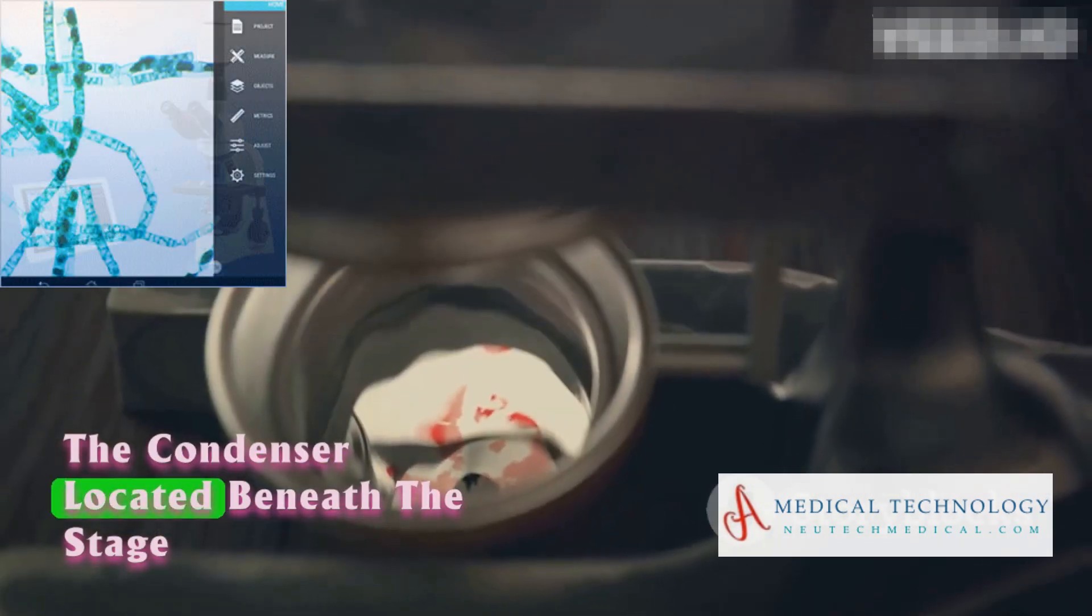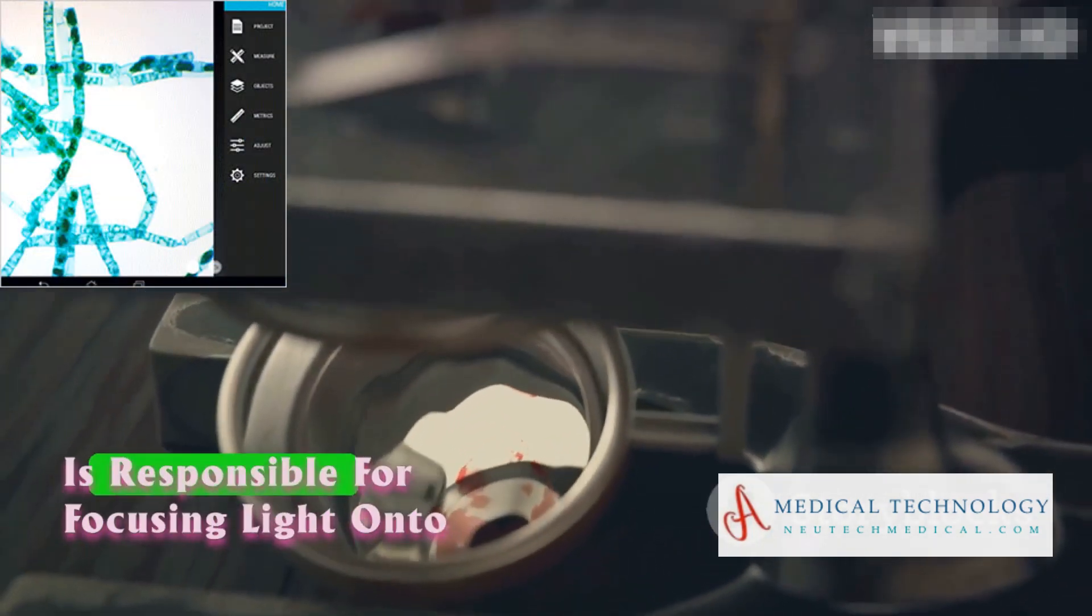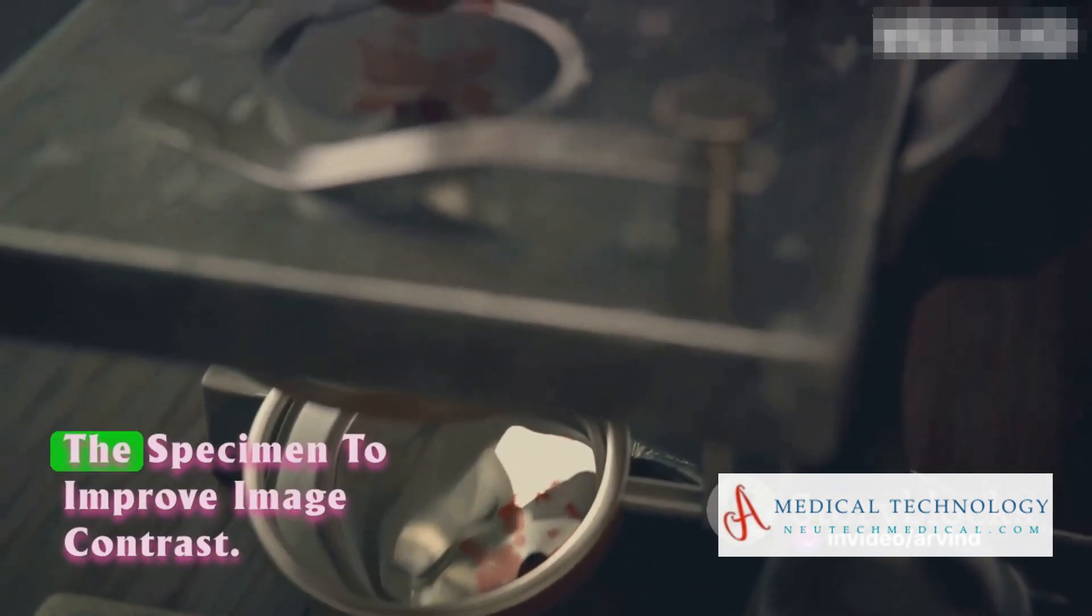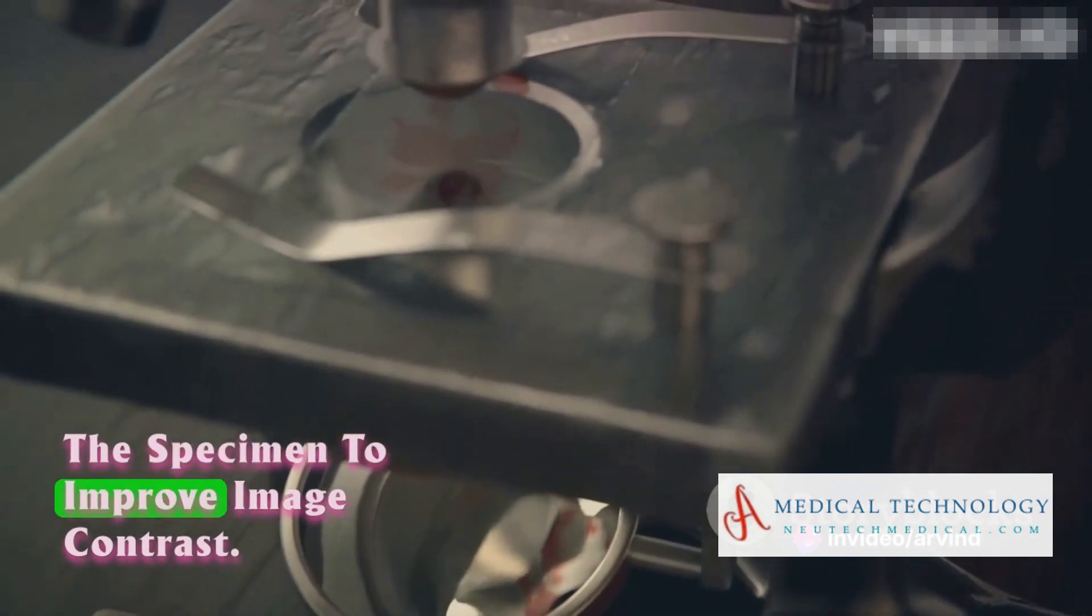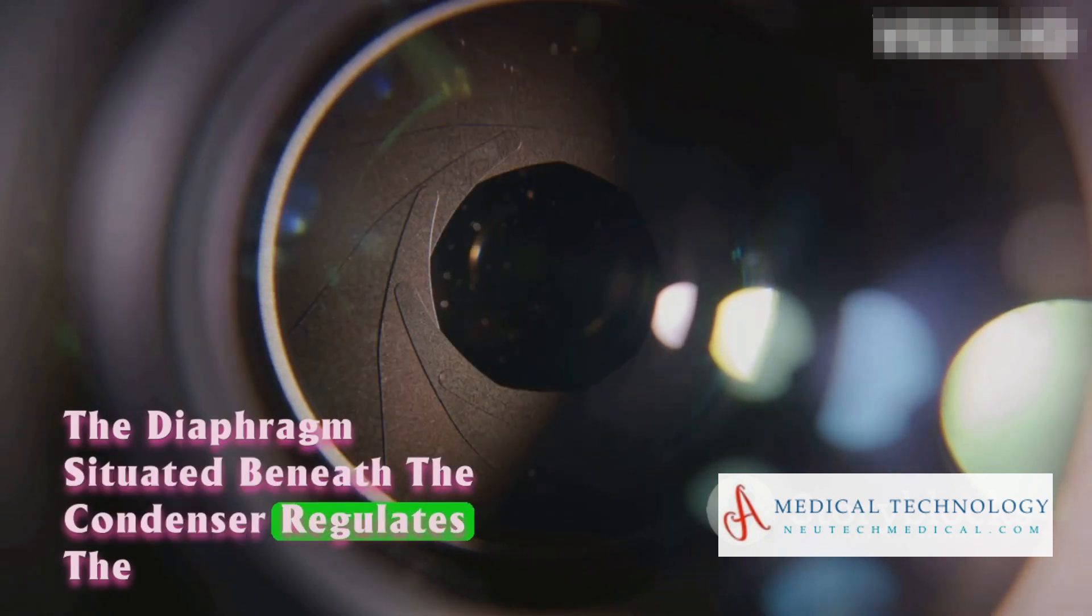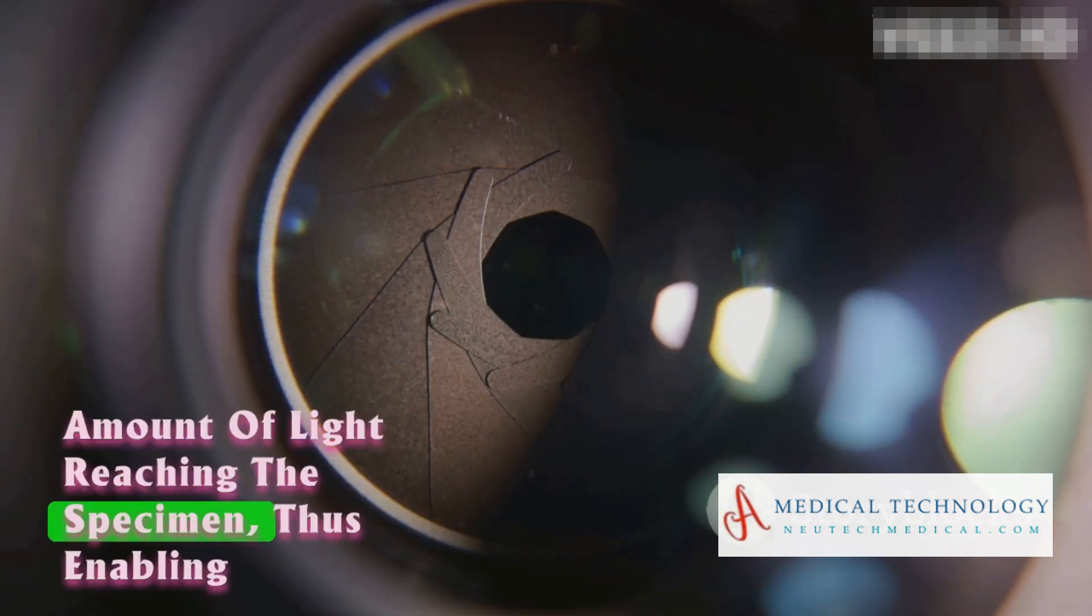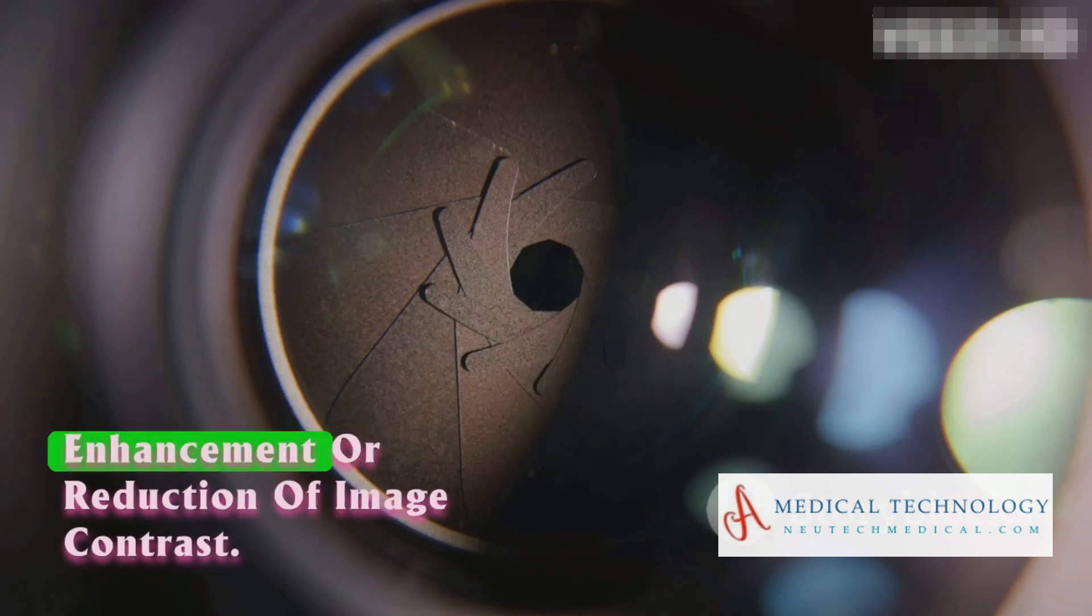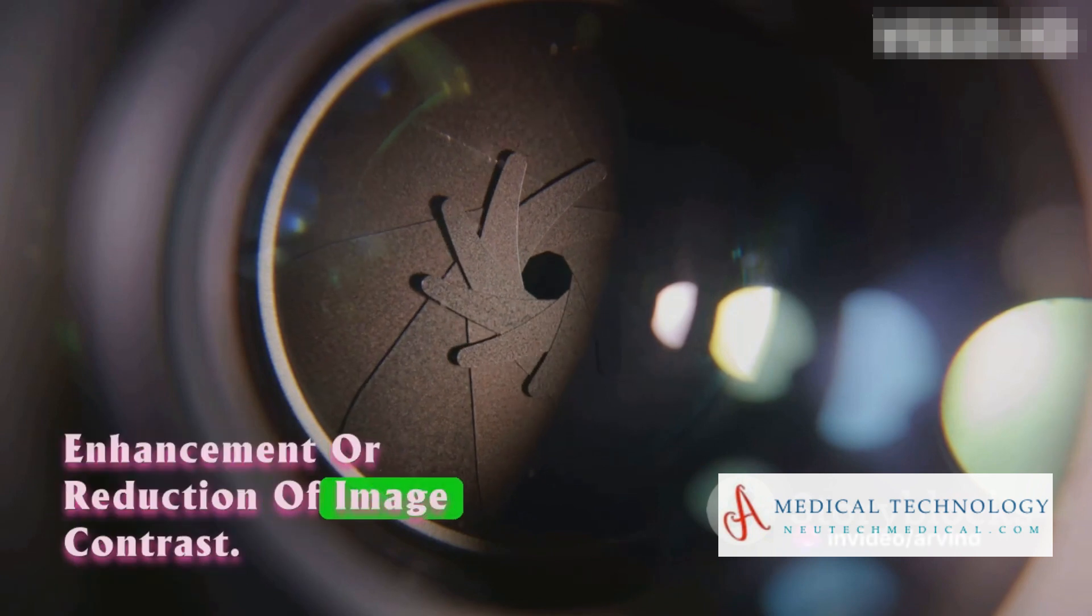The condenser, located beneath the stage, is responsible for focusing light onto the specimen to improve image contrast. The diaphragm, situated beneath the condenser, regulates the amount of light reaching the specimen, thus enabling enhancement or reduction of image contrast.